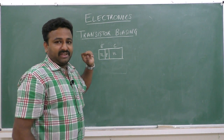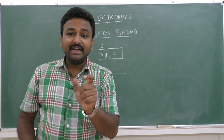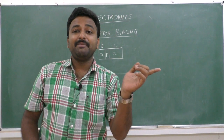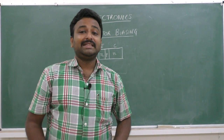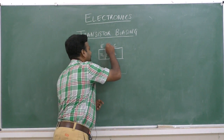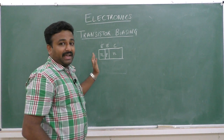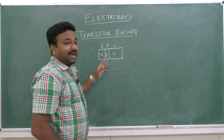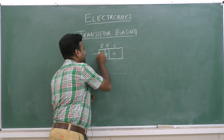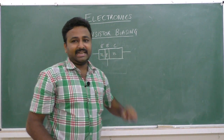The middle region regulates the flow of majority charge carriers from emitter to collector. Therefore, this region is known as the base region. In this manner, an NPN transistor having three terminals — emitter, base, and collector — is constructed.